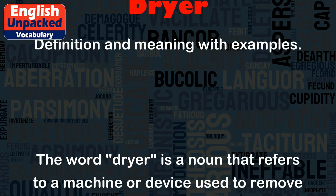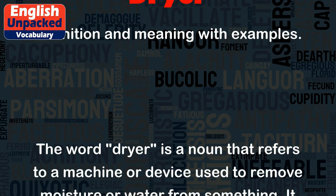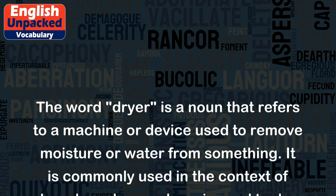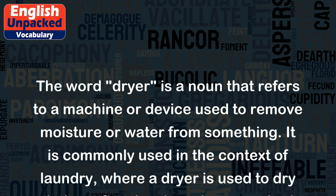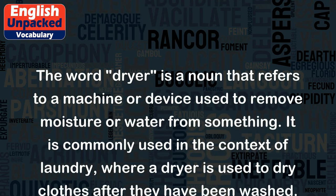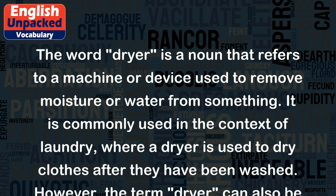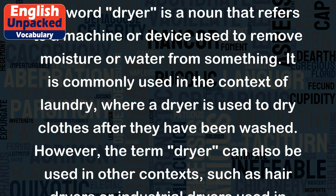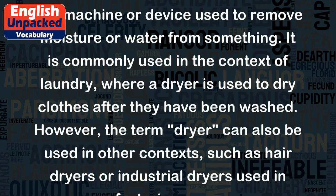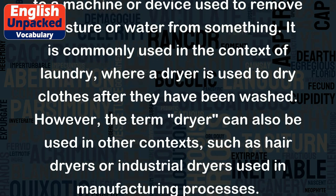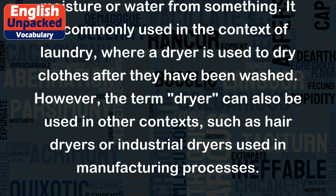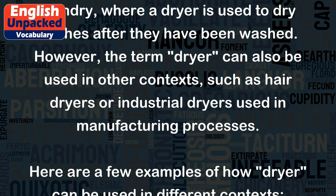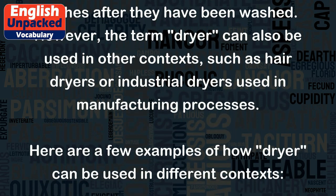The word 'dryer' is a noun that refers to a machine or device used to remove moisture or water from something. It is commonly used in the context of laundry, where a dryer is used to dry clothes after they have been washed. However, the term 'dryer' can also be used in other contexts, such as hair dryers or industrial dryers used in manufacturing processes.